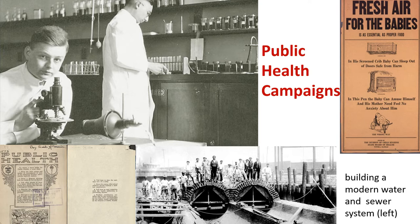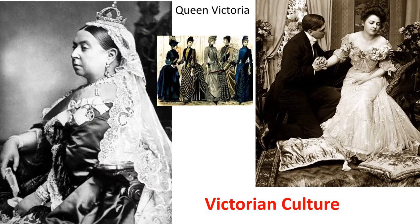Other reformers looked for things like public health campaigns — improving the city by building a better sewer system or a water system, and more intensified public efforts to fight epidemics. There were a lot of disagreements between reformers, and you see this in the debate over Victorian culture. Victorian culture, named for the British Queen Victoria, was a very staid, hierarchical culture based on morals and rules — everyone had set expectations and genteelness.